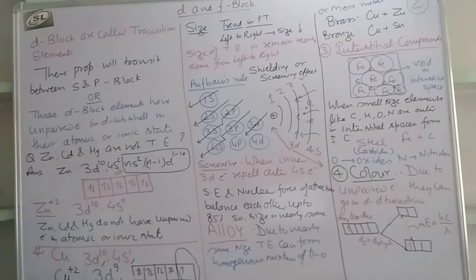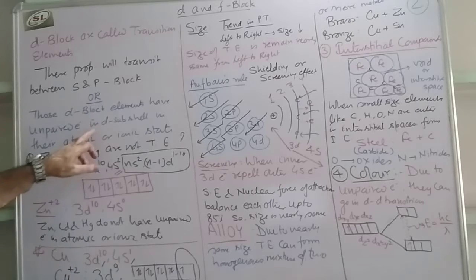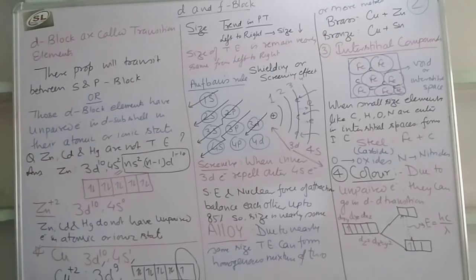There is another definition, a very important definition. Those D block elements have unpaired electrons in D sub-shell in their atomic or ionic state.